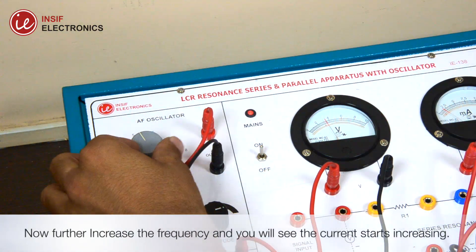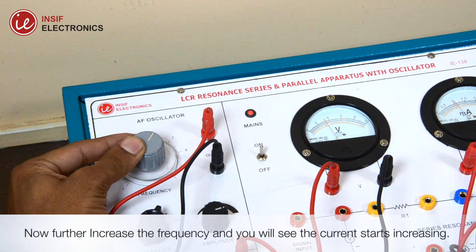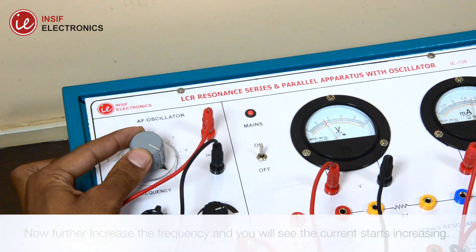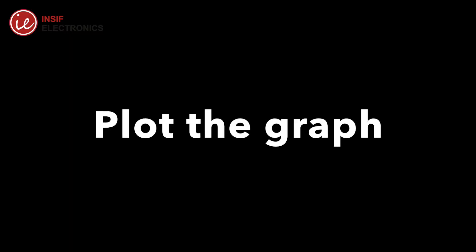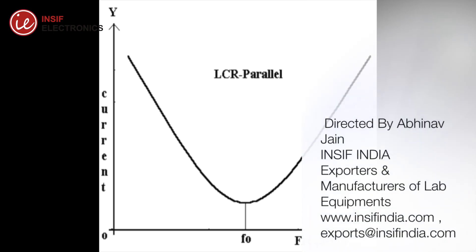Now further increase the frequency and you will see the current is increasing. Now you can plot the graph and it seems to be like this. Compare the calculated resonance frequency from the formula to the experimental value in both cases.